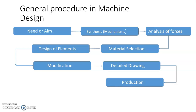The next step in the procedure is selection of material — what material will be used. After that, design of individual elements: each and every element is designed separately and then combined to form the mechanism. If the designer thinks modifications are needed, dimensions and quality of the finished product are checked before incorporating modifications.